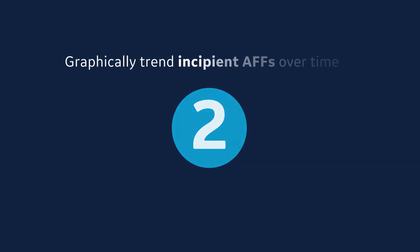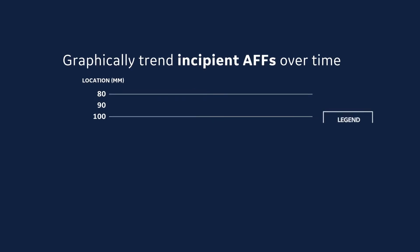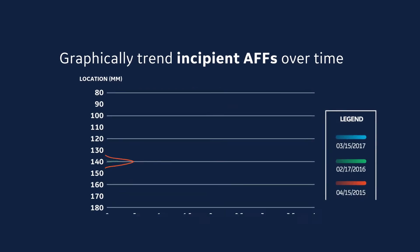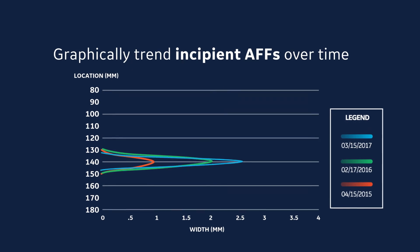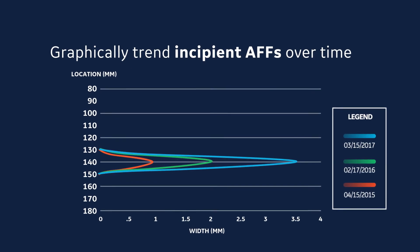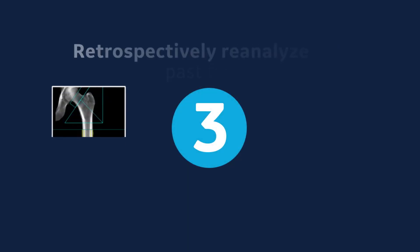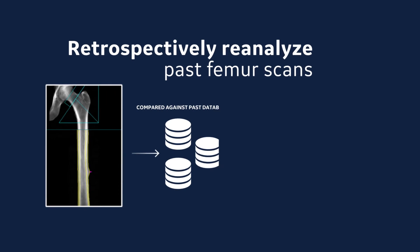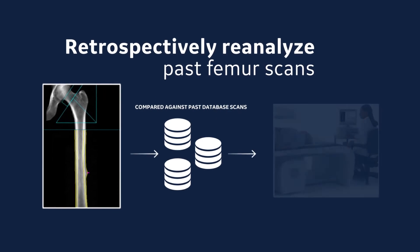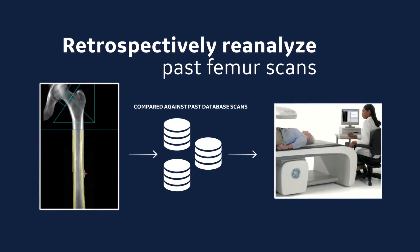Second, graphically trend incipient AFFs over time through subsequent DEXA scans of the same patient. Third, retrospectively reanalyze past femur scans for signs of AFF.